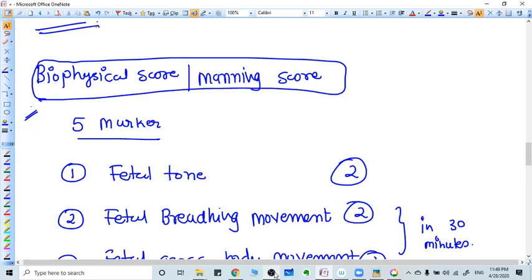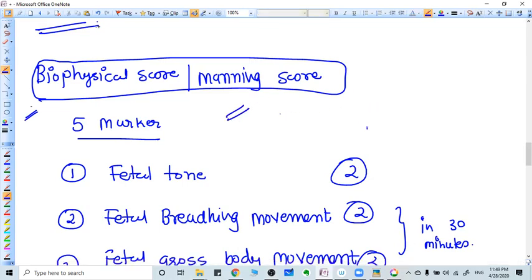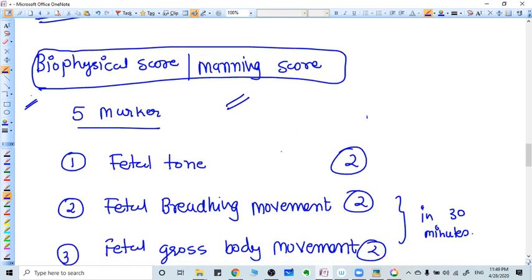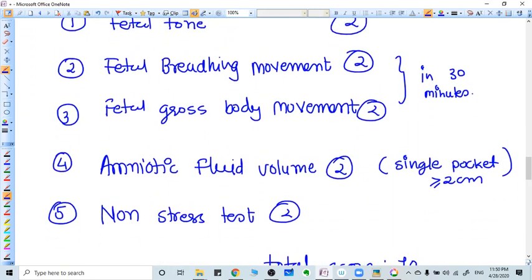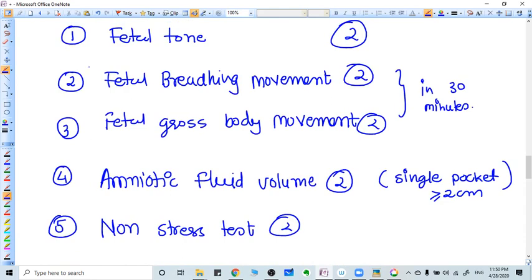Hi, hello friends. In this video we are going to talk about biophysical score, also known as Manning score. In this score we have five markers you need to remember. First of all, fetal tone.